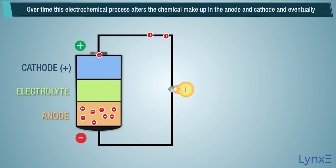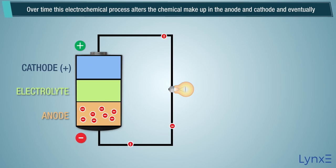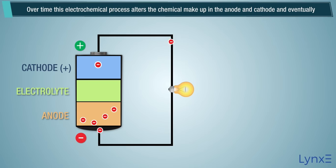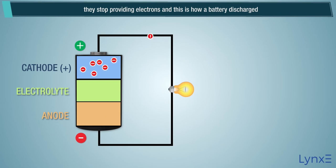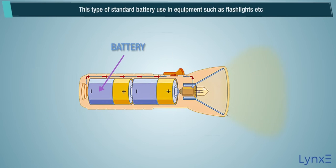This in turn provides power to any appliance placed along the way. Over time, this electrochemical process alters the chemical makeup in the anode and cathode, and eventually they stop providing electrons — this is how a battery discharges. This type of standard battery is used in equipment such as flashlights, etc.